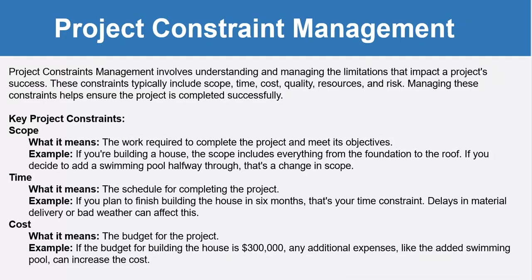The key project constraints are: first, scope — the work required to complete the project and meet its objectives. For example, if you are building a house, the scope includes everything from the foundation to the roof. If you decide to add a swimming pool halfway through, that is a change in scope.